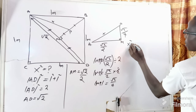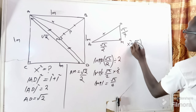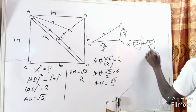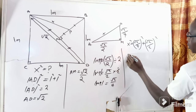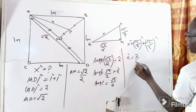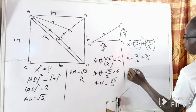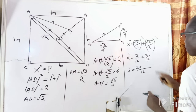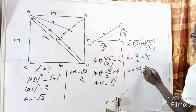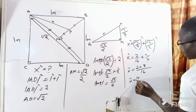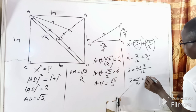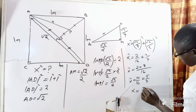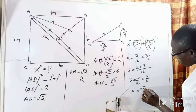So x squared equals the square root of two divided by four, whole squared, plus the square root of two divided by two, whole squared. That means x squared equals two divided by 16 plus two divided by four. The LCM is 16, giving us two plus eight, so x squared equals ten divided by 16, which simplifies to five divided by eight. Therefore x equals the square root of five divided by two root two.